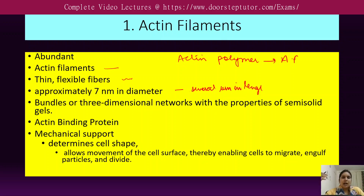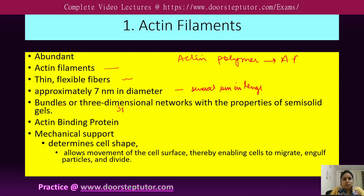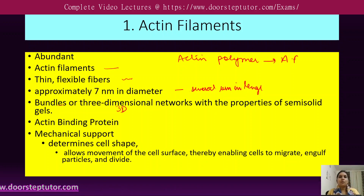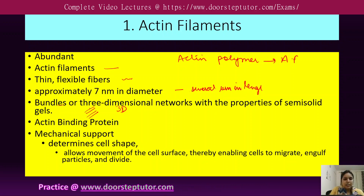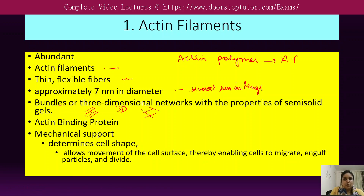Within the cell, actin filaments are present in higher-order structures — either in the form of bundles or in the form of a three-dimensional network with the property of a semi-solid gel. In a bundle, the actin filaments are aligned parallel to each other and closely linked by proteins. In the three-dimensional network, an intense network of actin filaments is joined by protein filaments, giving a semi-solid gel-like structure.